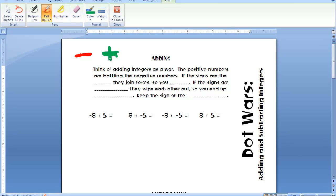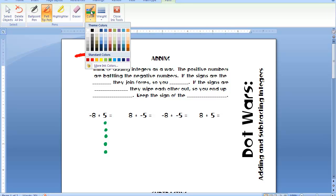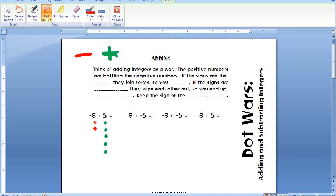Alright, so here's what we're going to do. We're going to look at this first problem. And we're going to use dots to represent the numbers. Since I already have my green pen, I'm going to start with a positive five. Notice I'm using green for positive and I'm drawing five dots. And I'm going to use red for negative. One, two, three, four, five, six, seven, eight.